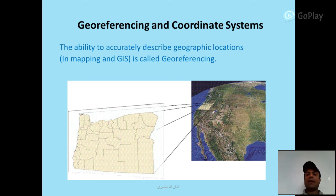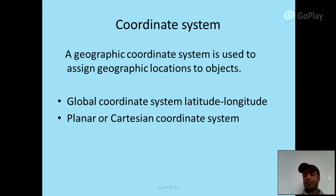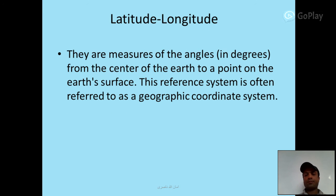Georeferencing and Coordinate Systems: the ability to accurately describe geographic locations in mapping and GIS. A geographic coordinate system is used to assign geographic locations to objects. The global coordinate system uses altitude and longitude. Latitude and longitude are measures of the angles in degrees from the center of the earth to a point on the earth's surface. This reference system is often referred to as a geographic coordinate system.